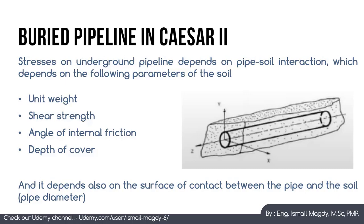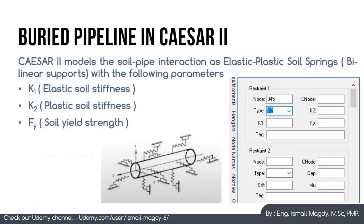Also, it depends on the contact area between the pipe and the soil, which is a factor of the pipeline diameter. CESAR2 software models the pipe-to-soil interaction in the form of elastic-plastic springs around the pipeline at each node.